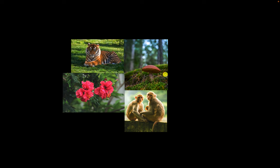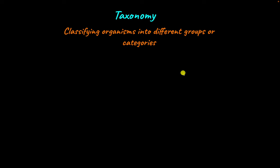Classification helps us do just this. Classification groups organisms based on any similarities or differences they have, which makes it easier to study those organisms. Taxonomy involves classifying organisms into different groups or categories.